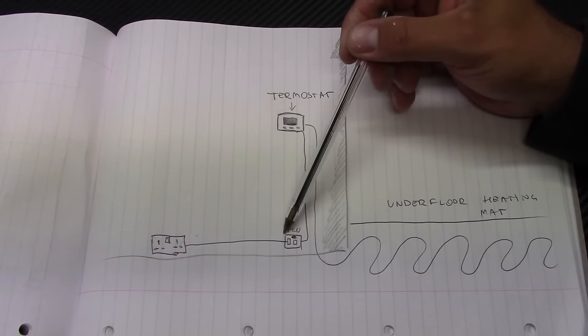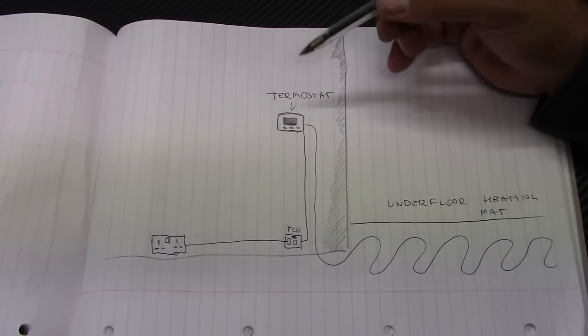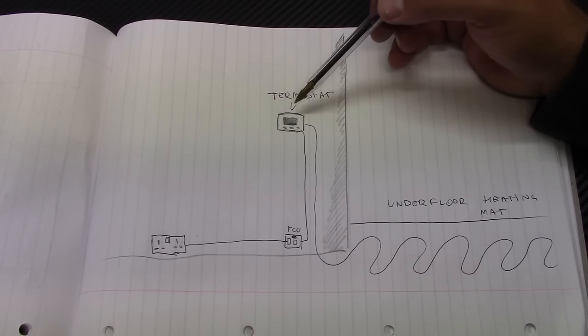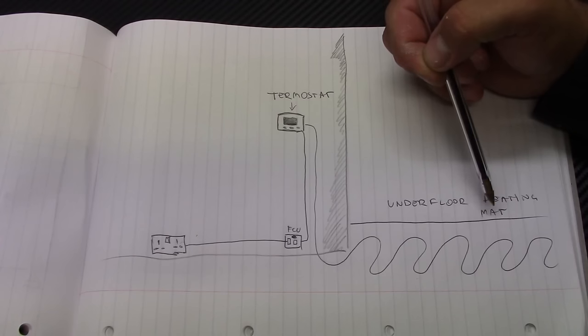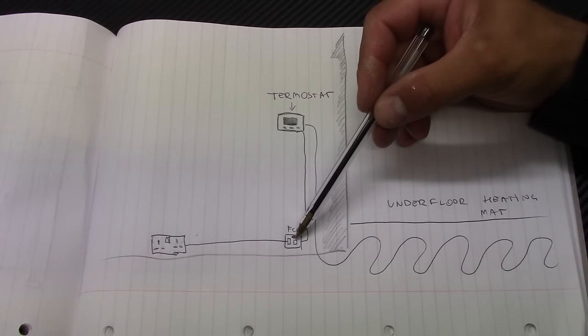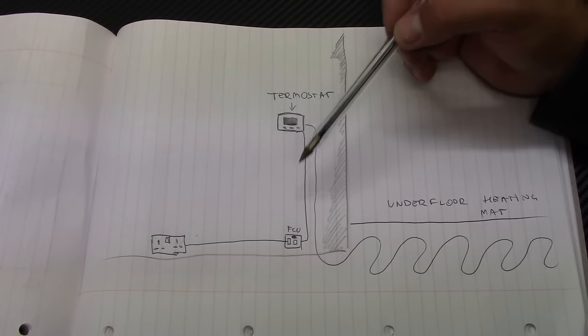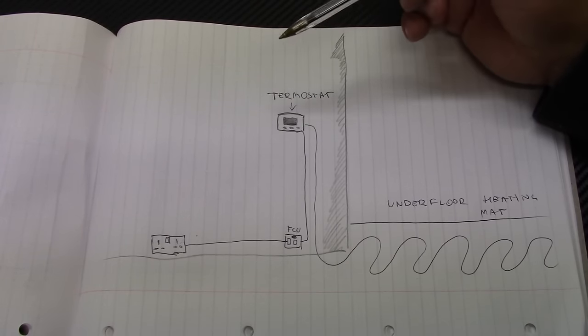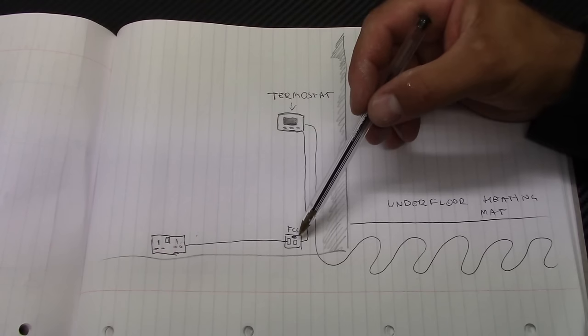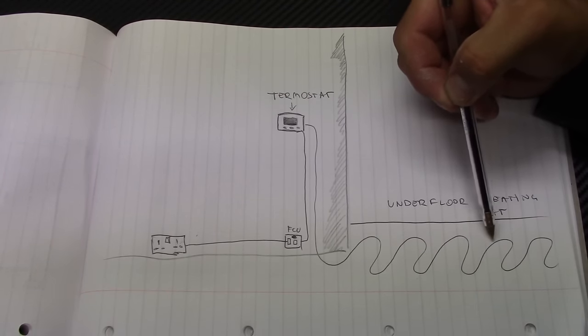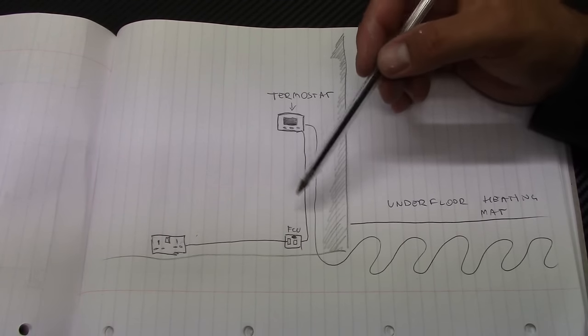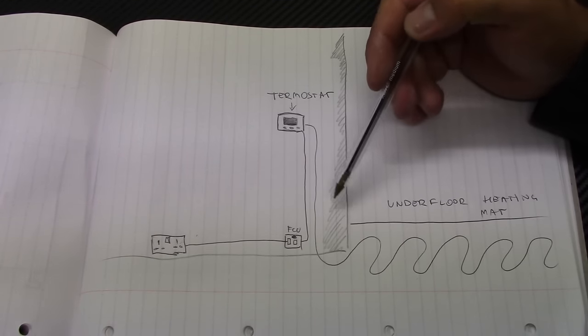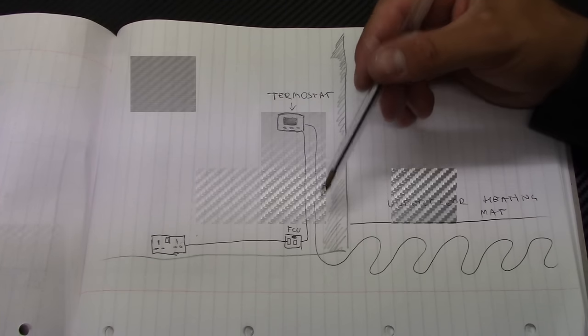So when you take the power from the socket outlet you install FCU, 13 amp FCU just below the thermostat. And this in the future if you need to maintain the thermostat or something happened to underfloor heating mat, you can easily switch it off in here using the FCU switch. Also you need to remember that the load of the mat is limited by the 13 amp fuse here. So the underfloor heating mat cannot exceed 13 amps.